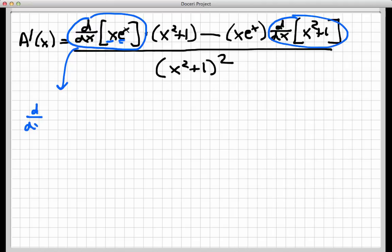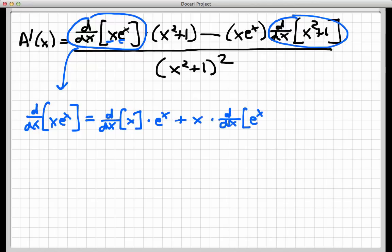So the derivative here of x times e to the x. According to the product rule, that would be the derivative of the first function, that's the derivative of x, times e to the x, plus x times the derivative of e to the x. So these derivatives are getting simpler and simpler, and that's the whole point behind these rules. The derivative of x with respect to x is 1, times e to the x, plus x times.